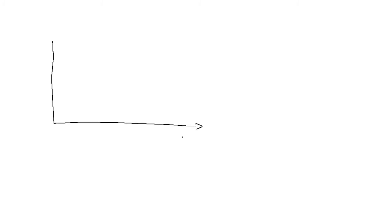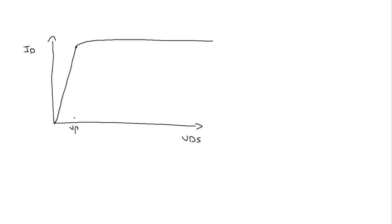In the previous video, we saw the output characteristics of the n-channel junction field effect transistor, which was between the VDS — the drain to source voltage — and the ID, which was the drain current. We saw that the output characteristics had two regions: one was the ohmic region and the other was the saturation region, and this was our pinch-off. At the pinch-off for the VGS equal to 0 volt case, we have the maximum current which was called the IDSS. Then we said that negative values of VGS allow us to reach the saturation level at lower values of VDS.